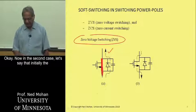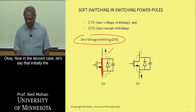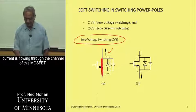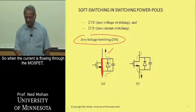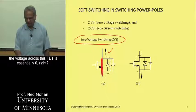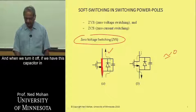And now in the second case, let's say that initially the current is flowing through the channel of this MOSFET as shown here, and we want to turn it off. So when the current is flowing through the MOSFET, the voltage across this FET is essentially zero. And when we turn it off,